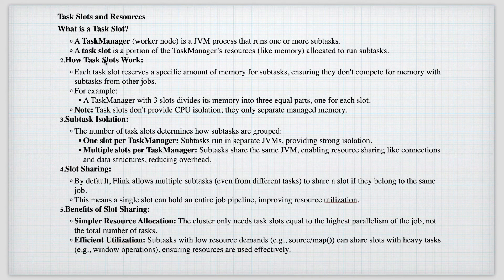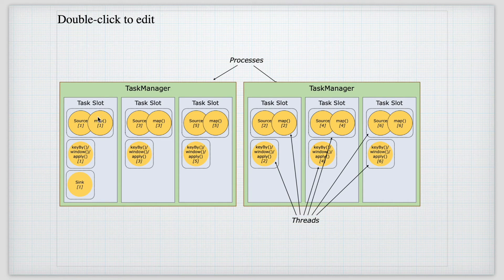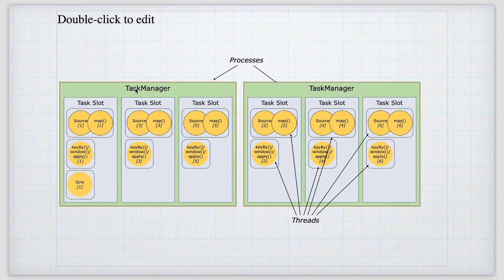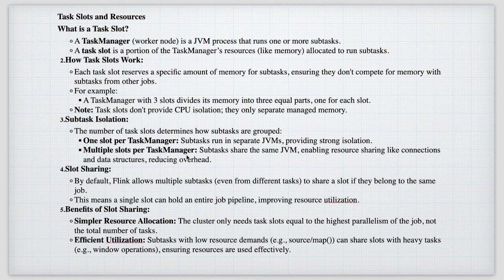Now let's look at task slots and resources in more detail. A Task Manager is a JVM process, and inside that JVM we have multiple task slots. A task slot is a portion of the Task Manager's resources — specifically memory — allocated to run sub-tasks. For example, if a Task Manager has 300 MB of RAM and three task slots, each slot gets 100 MB of memory. There can be one slot per Task Manager or multiple slots per Task Manager. By default, Flink splits into multiple task slots for the same job.